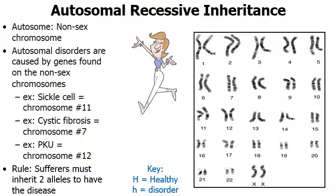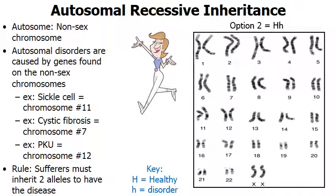There are three genotype combinations that everyone might have. Option one: she might have two dominant healthy alleles — homozygous dominant — and she'd be healthy. A second genotype option: she could be heterozygous, meaning on one chromosome 12 she has a dominant healthy allele, and on the other chromosome 12 is the defective PKU gene. Because she has the dominant healthy allele, this woman would be healthy. Then there's the third option — homozygous recessive — where on each chromosome 12 she has the recessive PKU gene and she would have the disease. The same is true for men: on chromosome 12 a man could be homozygous dominant, heterozygous, or homozygous recessive with PKU.